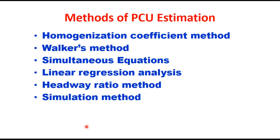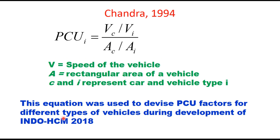The equation used in the Indian Highway Capacity Manual is the one I proposed in 1994 during my research work at IIT Roorkee. This equation states that the PCU for vehicle type i equals the speed ratio of a car with respect to vehicle type i divided by the area ratio of a car and vehicle type i. This equation was used to derive PCU factors for different vehicle types during development of the Indian Highway Capacity Manual. Though the equation looks simple, it is not, because speed is influenced by several factors of the traffic stream and geometry, making PCU here dynamic in nature.